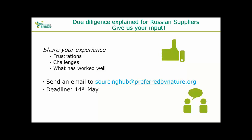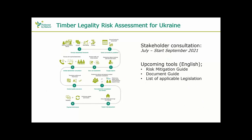Please send an email to me via the Sourcing Hub at preferred by nature.org by 14th of May. The second session after Russia covers Ukraine. The status of the Ukrainian risk assessment is that it is still in the final stages of development — we have completed the initial research and are now engaging stakeholders and finalizing the draft. We can present our findings and risks, but have not yet completed the final QA. The risk assessment will be available for public consultation in July, together with a risk mitigation guide, document guide, and list of applicable legislation.